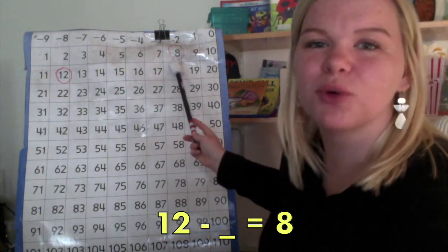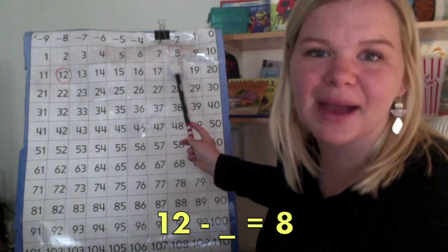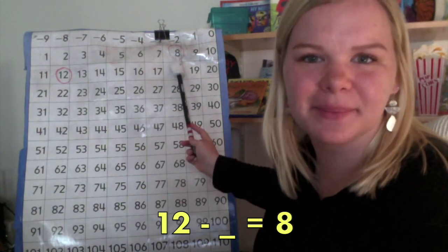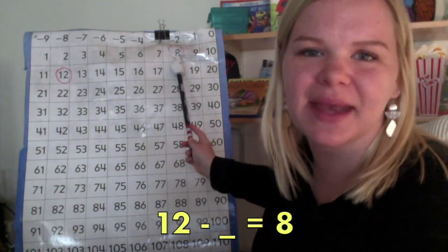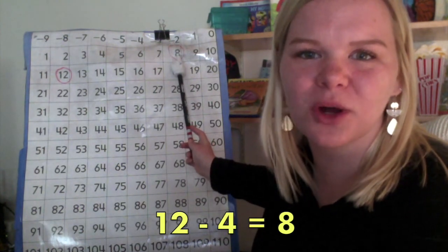It took us 4 hops to get from 12 back to 8. So, we know that the missing number is 4. To make 12 minus 4 equals 8.